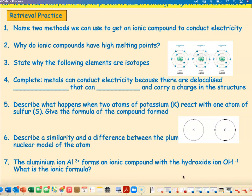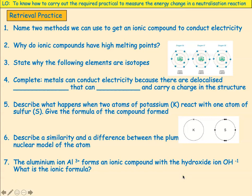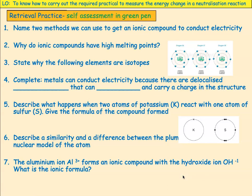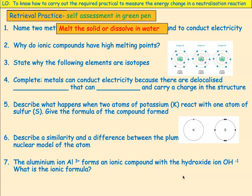Welcome back. Let's self-assess our work. Name two methods we can use to get an ionic compound to conduct electricity. The two methods are: we can melt the solid or dissolve the solid in water.